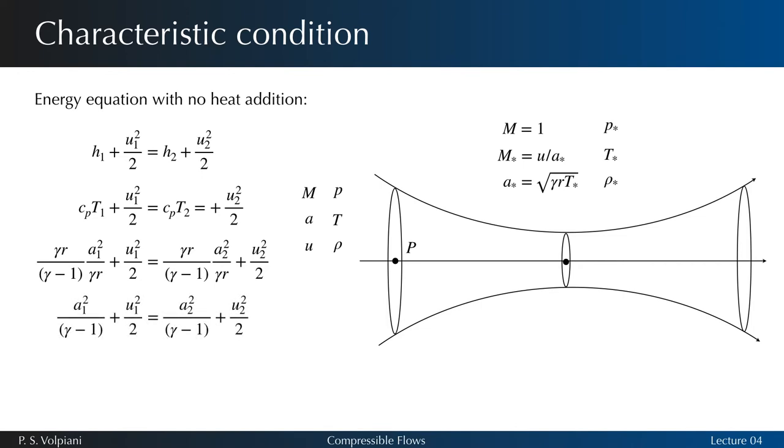Then the flow velocity is sonic and u2 equals a star. The previous equation becomes the following.